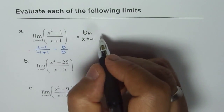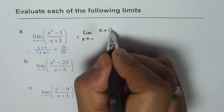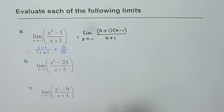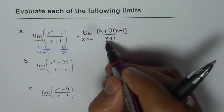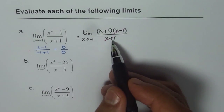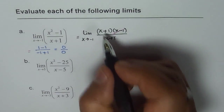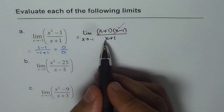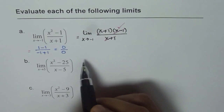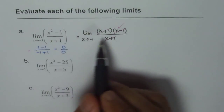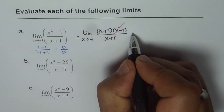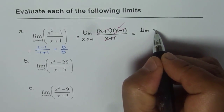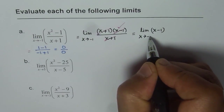We will factor both numerator and denominator. In this case the denominator is already factored. The numerator can be written as x plus 1 times x minus 1, and we have x plus 1 in the denominator. You can see that x plus 1 is the common factor which caused 0 over 0. When x equals minus 1, the first factor becomes 0 and the denominator becomes 0. So we can write this function as the limit of x minus 1 as x approaches minus 1.